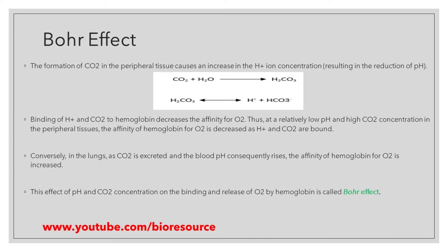The binding of H⁺ and carbon dioxide to hemoglobin decreases its affinity for oxygen. At relatively low pH and high carbon dioxide concentration in the peripheral tissue, the affinity of hemoglobin for oxygen is decreased as the H⁺ and CO2 are bound. When the pH is low, meaning higher concentrations of H⁺ are present, caused by the presence of carbon dioxide in the peripheral tissue, this results in the binding of H⁺ and CO2 to hemoglobin, thereby reducing the affinity for oxygen.